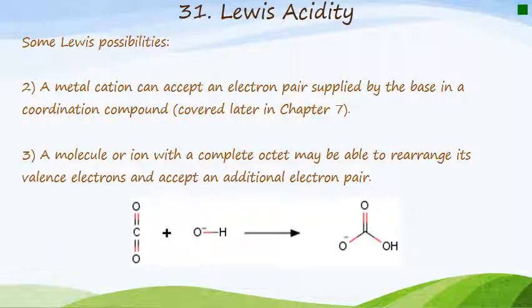The third possibility that we have is a molecule or an ion with a complete octet can possibly rearrange its valence electrons and accept an additional electron pair. So the example that's given here is with carbon dioxide and the hydroxide ion. And what we end up forming here is the carbonate anion, the carbonate ion. And what happens here is that the carbon is able to just rearrange its valence electrons such that over here it has a complete octet. And over here as well, it also has a complete octet. So all it did was rearrange its geometry. This is entirely possible.